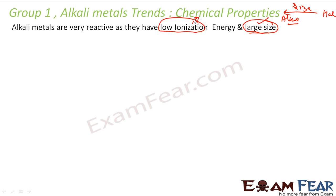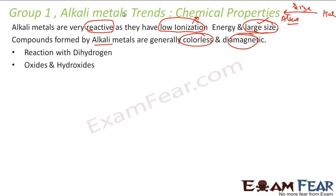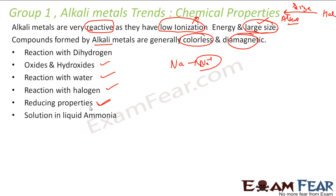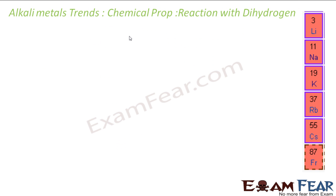The lower ionization energy is because of the one electron in the outermost shell, and the large size of the atoms. Because of this, they are very reactive. The compounds of the alkali metals are generally colorless and diamagnetic. In these trends, we will learn about the reaction with hydrogen, oxides and hydroxides, reaction with water, with halogens, reducing properties of alkali metals, reaction in solution of liquid ammonia, reaction with sulfur and phosphorus, reaction with mercury, and complex compounds.